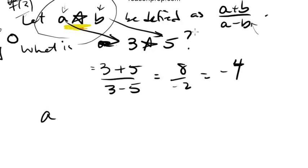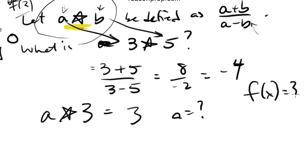They gave you a⋆b is that, and then they said that a⋆3 equals 3. What is a equal? This should look familiar to you. This is just like me giving you an f(x) and then saying f(x) equals 3, what is x equal? You don't put the 3 in. So we're not going to put this 3 in for a because we're solving for a.